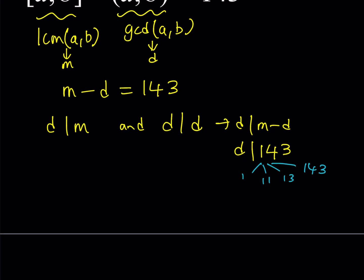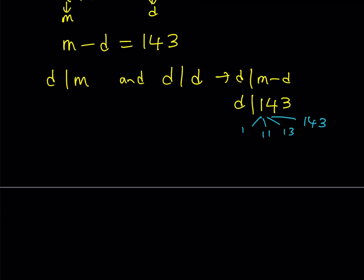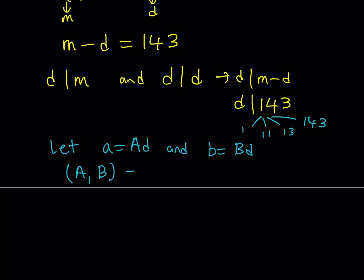Since D must divide 143 and D is the greatest common divisor, let A equal big-A times D, and B equal big-B times D, such that big-A and big-B are relatively prime. We can express this as GCD(A, B) equals 1. Since big-A and big-B are relatively prime, their common divisor is going to be 1, and we'll use this fact throughout the cases.